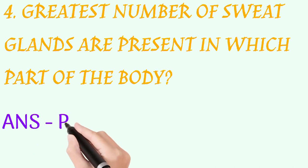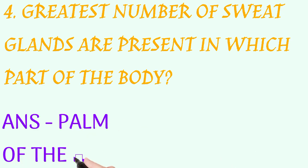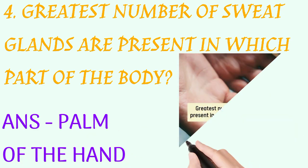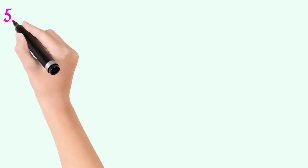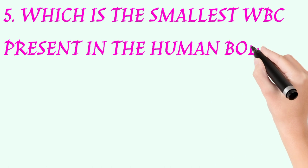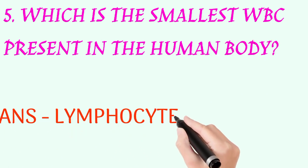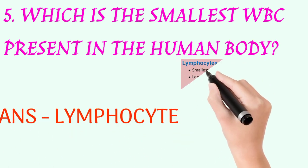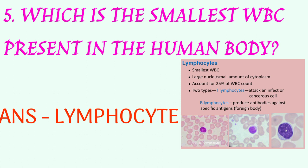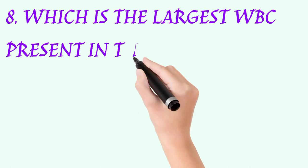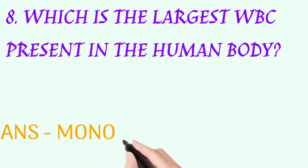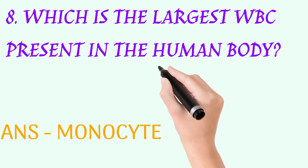The greatest number of sweat glands are present in which part of the body? Answer: palm of the hand. Which is the smallest WBC present in the human body? Answer: lymphocyte. Which is the largest WBC present in the human body? Answer: monocyte.